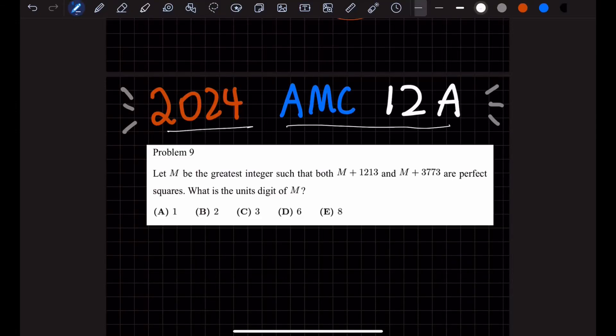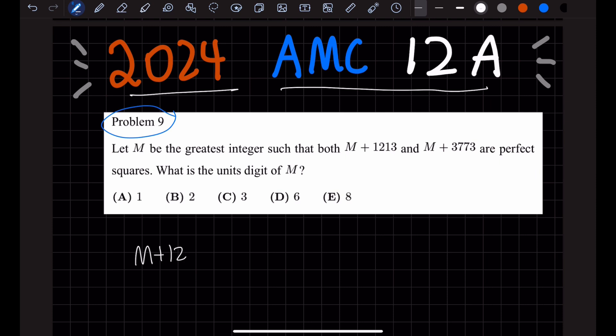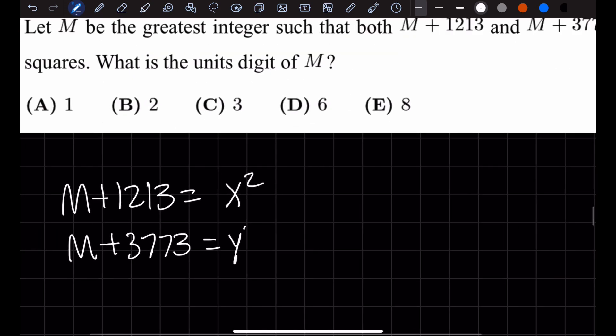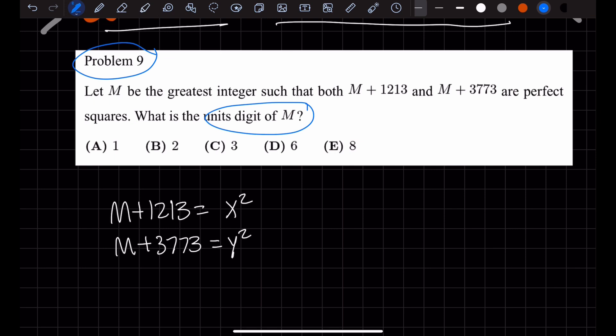Hello everyone, today we're doing AMC 12A 2024, Problem number 9. Let M be the greatest integer such that M plus 1,213 equals x squared, a perfect square, and M plus 3,773 equals y squared, another perfect square. What is the units digit of M?